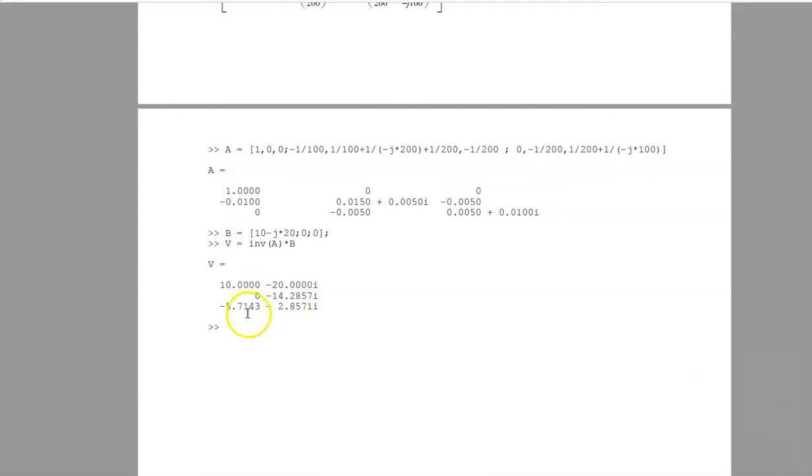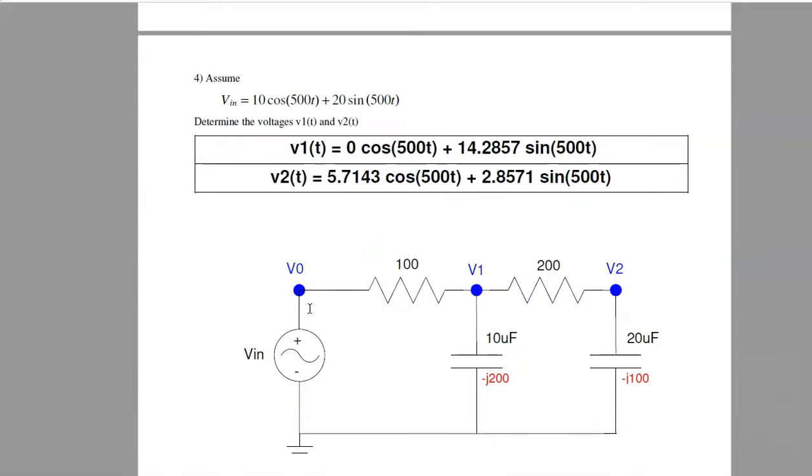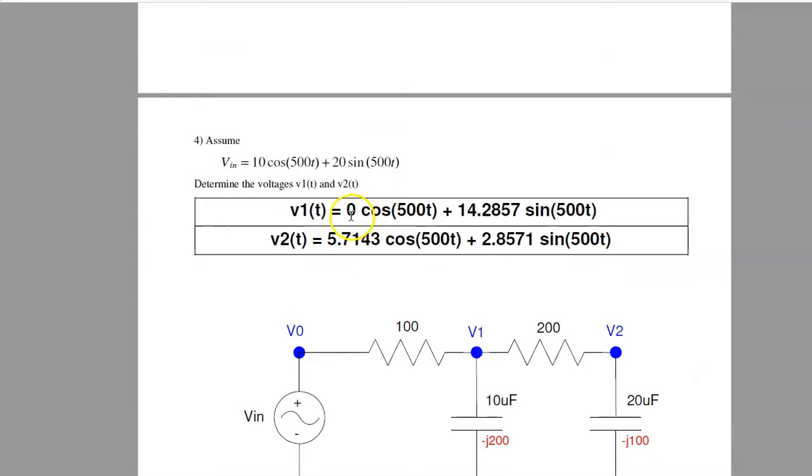What this means is the real part is cosine, minus J is sine. So your answer is the real part is cosine, minus J is sine. That's V1. For the second one, the real part is cosine, minus J is sine. That's V1 and V2.